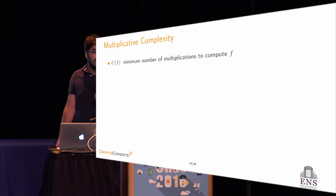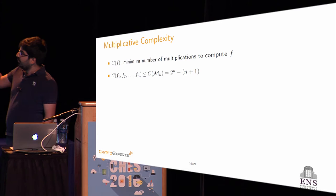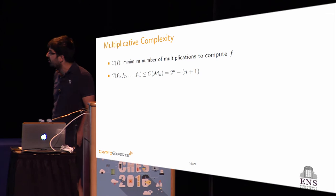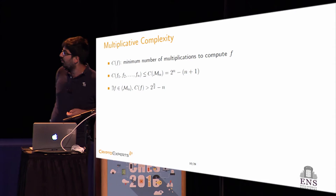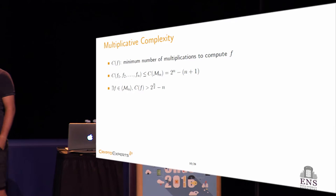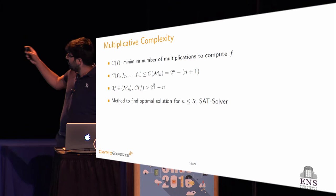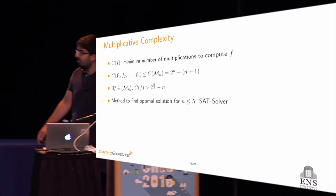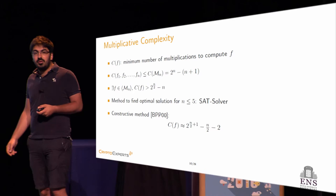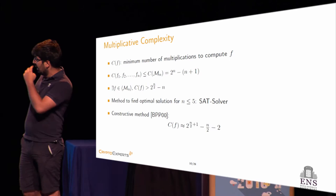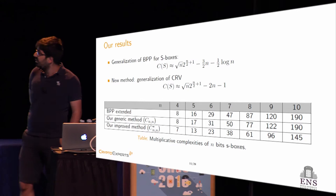For multiplicative complexity, there are some results in the state of the art. A simple upper bound is that the multiplicative complexity of a set of Boolean functions is upper bounded by 2^N − N + 1. There also exists a lower bound showing there exists a Boolean function whose multiplicative complexity is lower bounded by 2^(N/2) − N. This year at FSE, Stoffelsen proposed a method to find optimal solutions for small S-boxes (N ≤ 5) using a SAT solver, but this cannot scale to larger S-boxes. In 2000, Boyer et al. proposed a constructive method to approximate the multiplicative complexity of a Boolean function, and in this work we extended that method to approximate the multiplicative complexity of S-boxes.